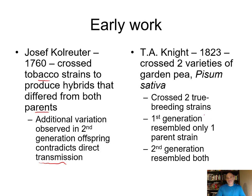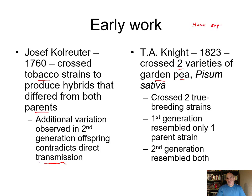T.A. Knight in 1823 crossed two varieties of the garden pea — the same organism Gregor Mendel would work with about 30 years later. The scientific name is Pisum sativum. When writing scientific names, only capitalize the genus; the specific epithet is lowercase. If handwriting, you underline both; if typing, write in italics.